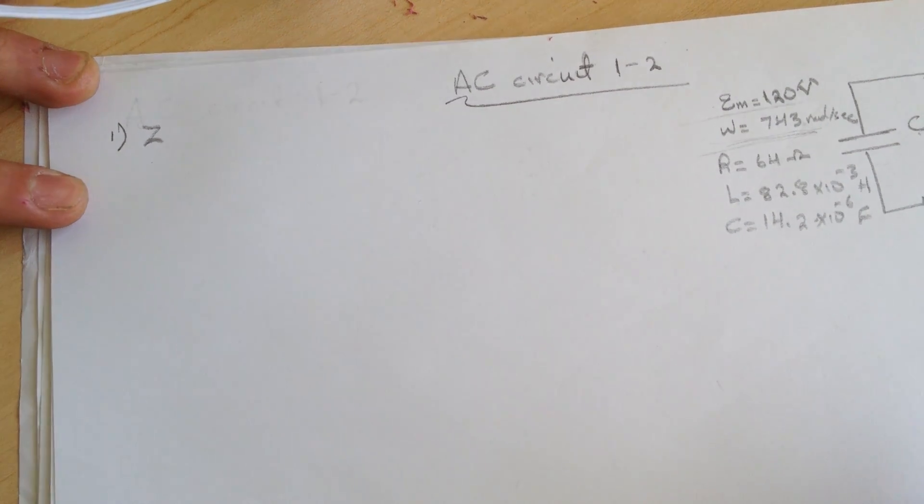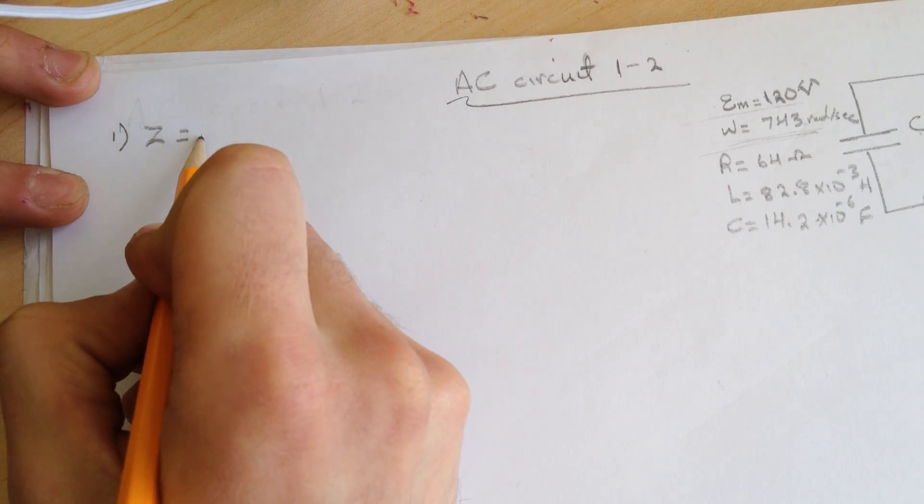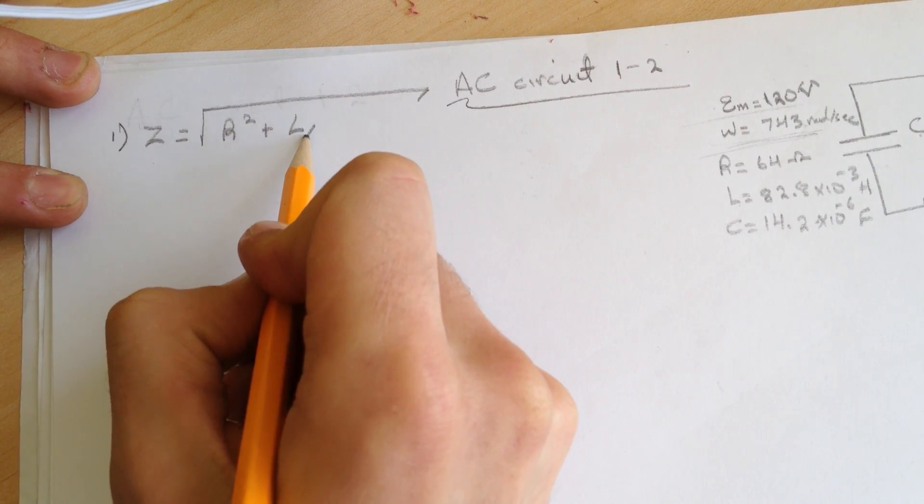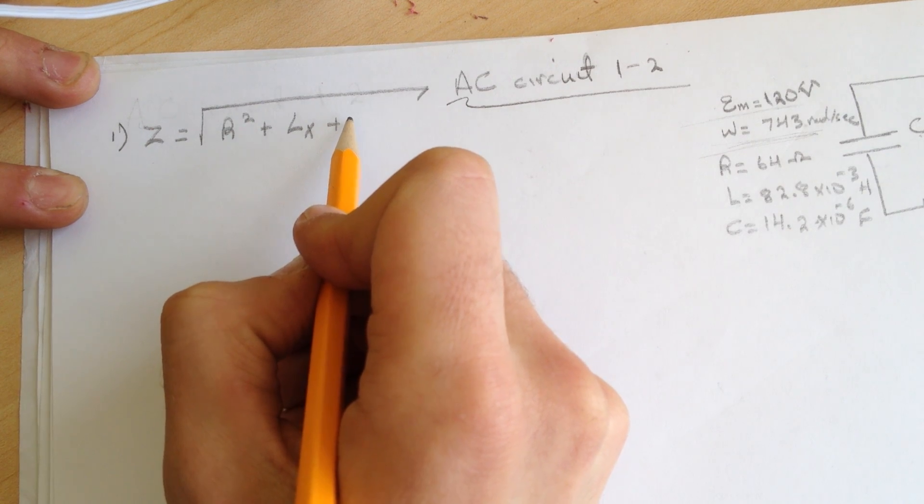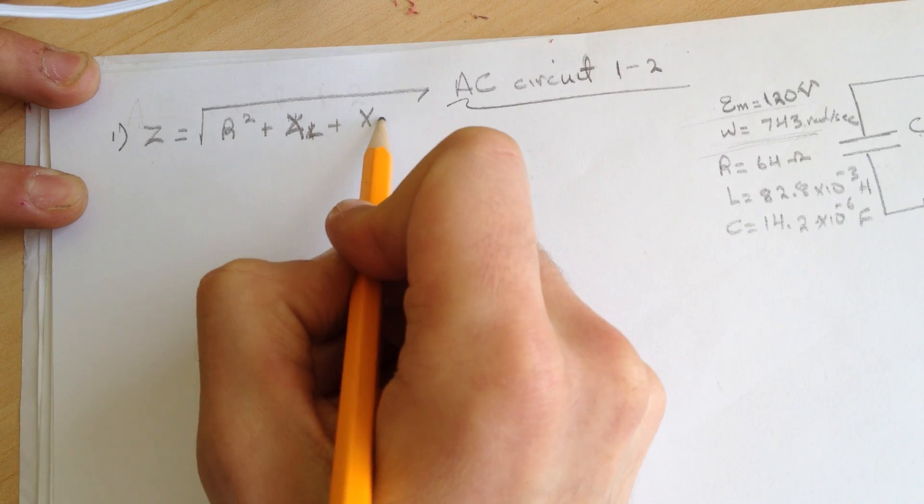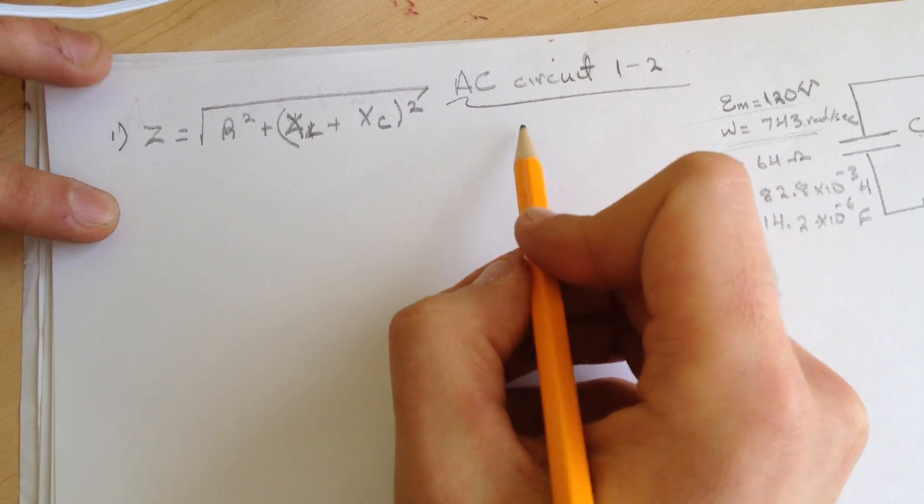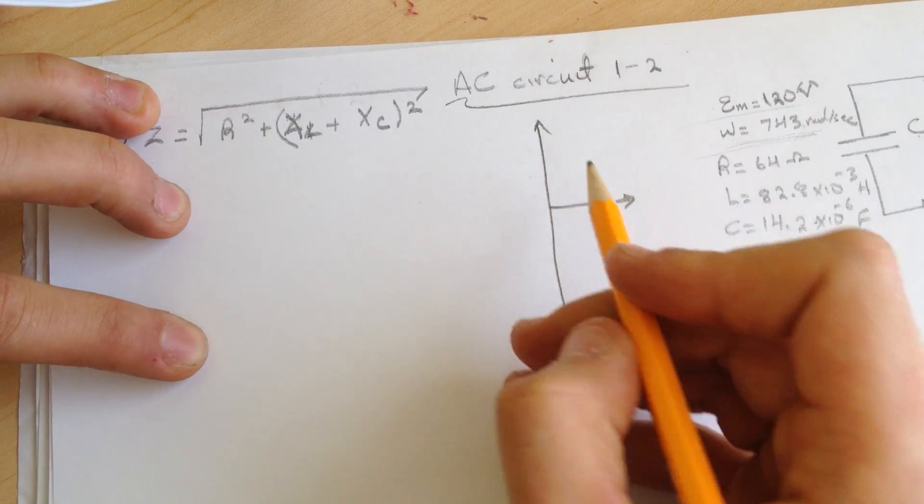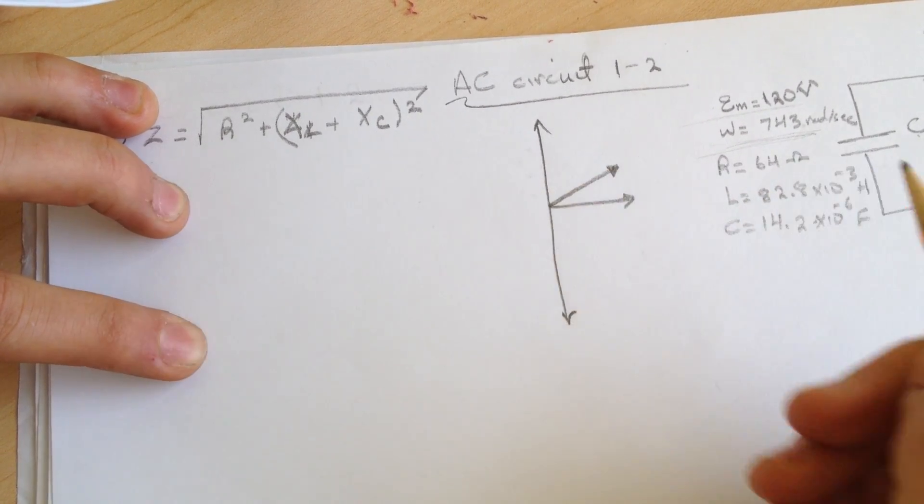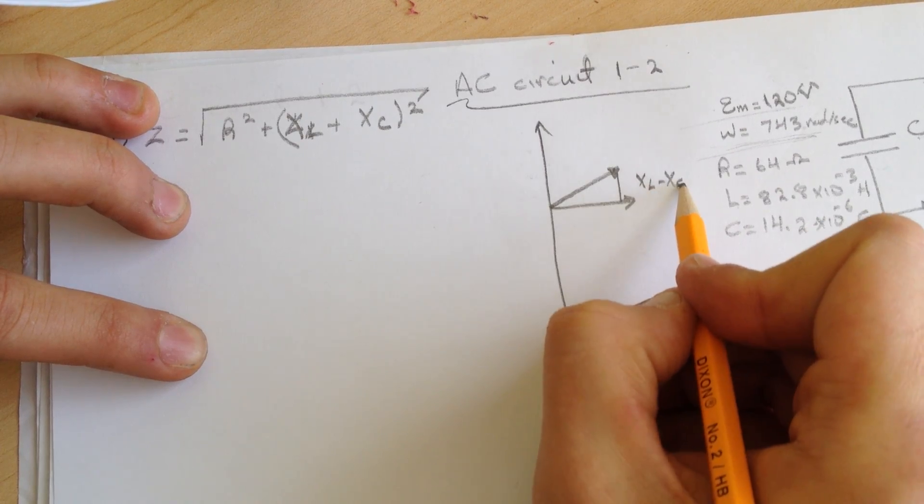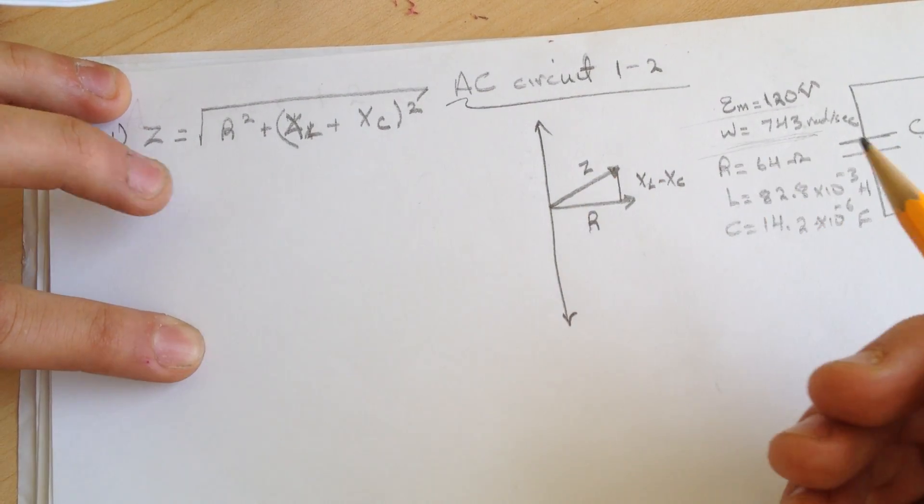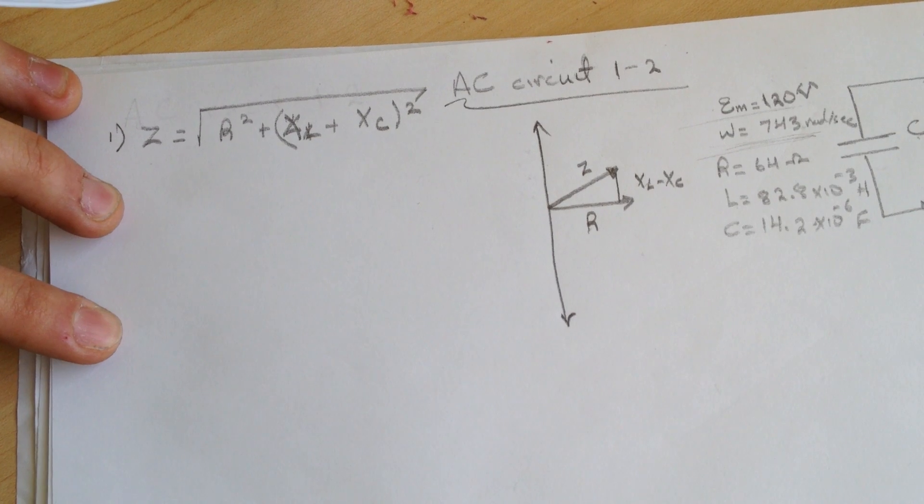The Z will be equal to the square root of R squared plus XL minus XC squared. But what is the Z? The Z is when we add those. This is XL minus XC, so this is the Z. This is the R. Just the Pythagorean rule anyway.